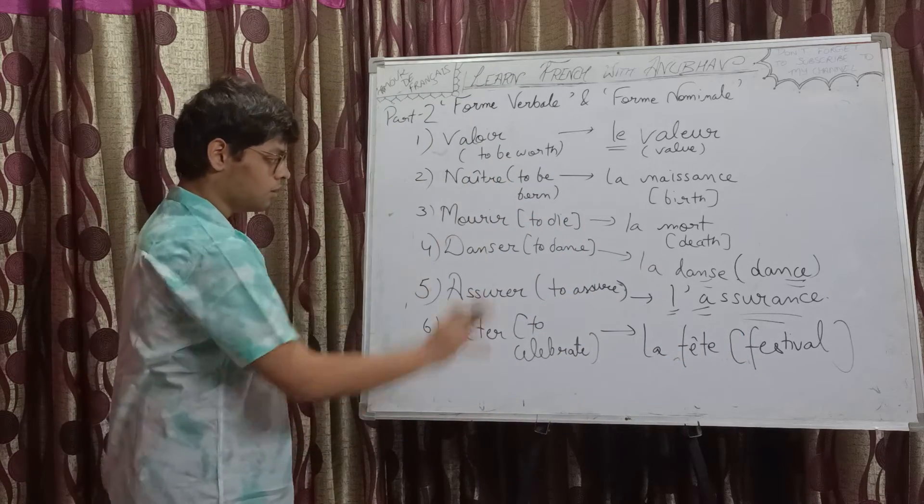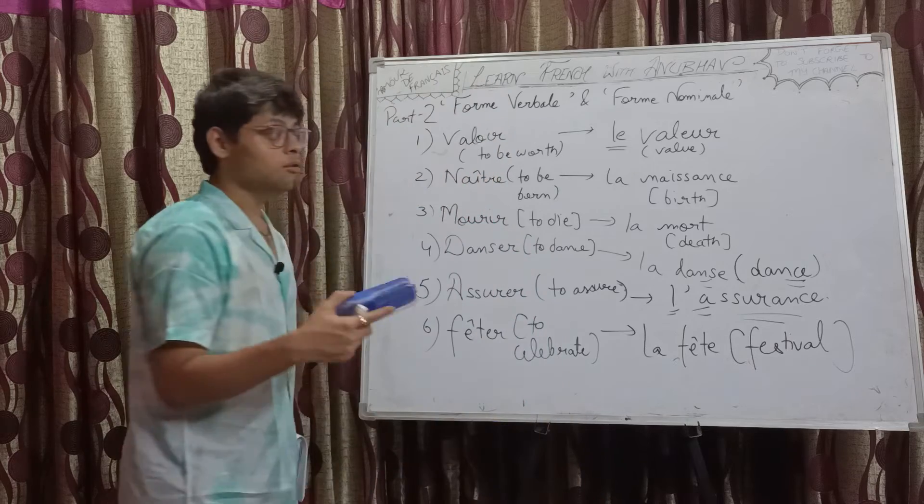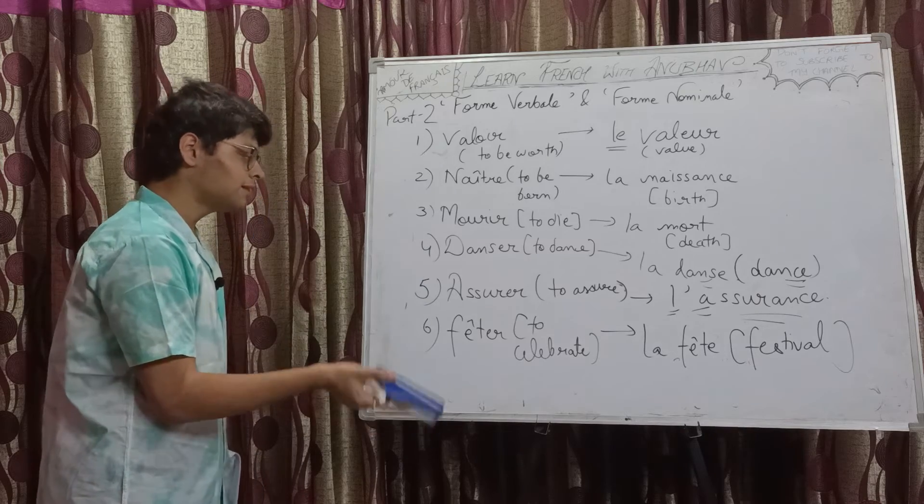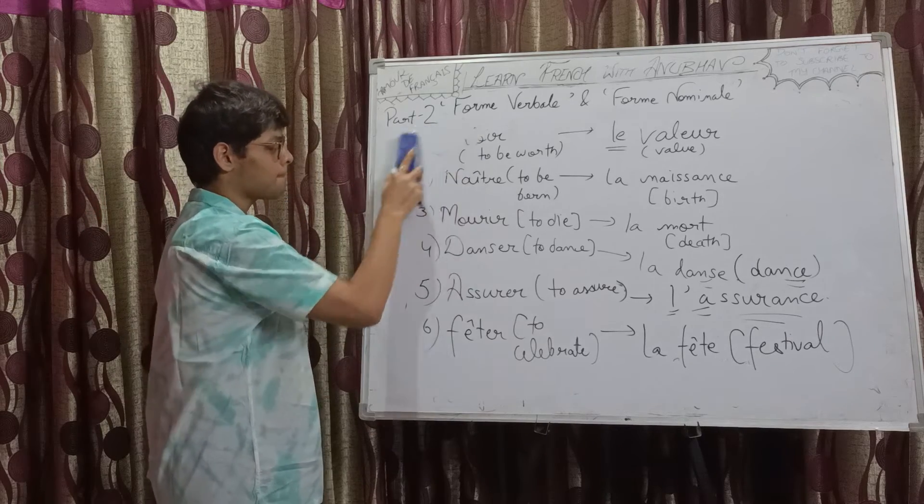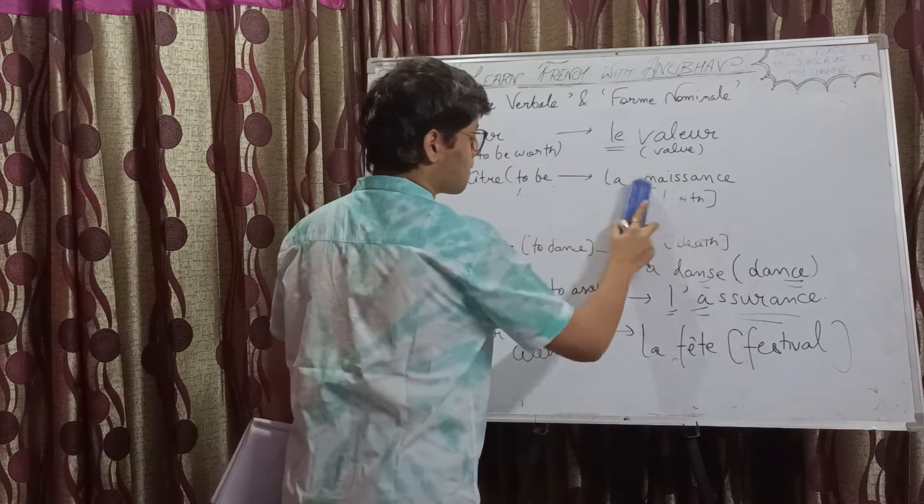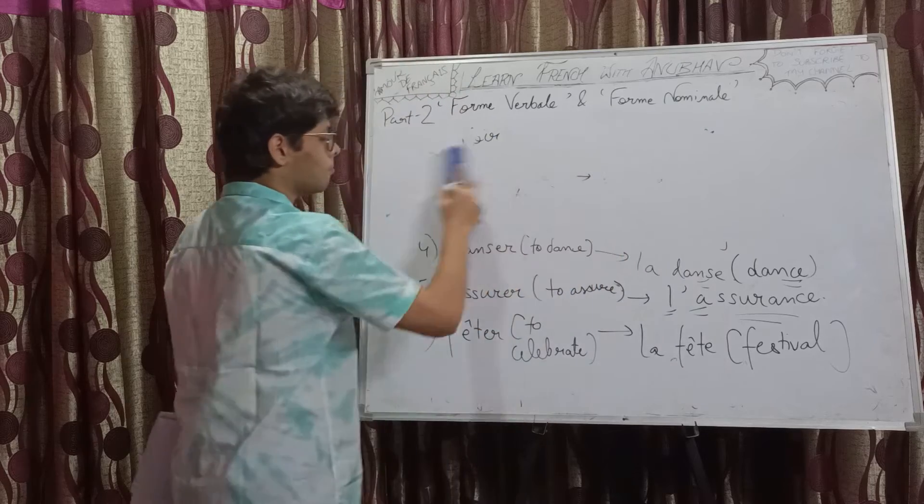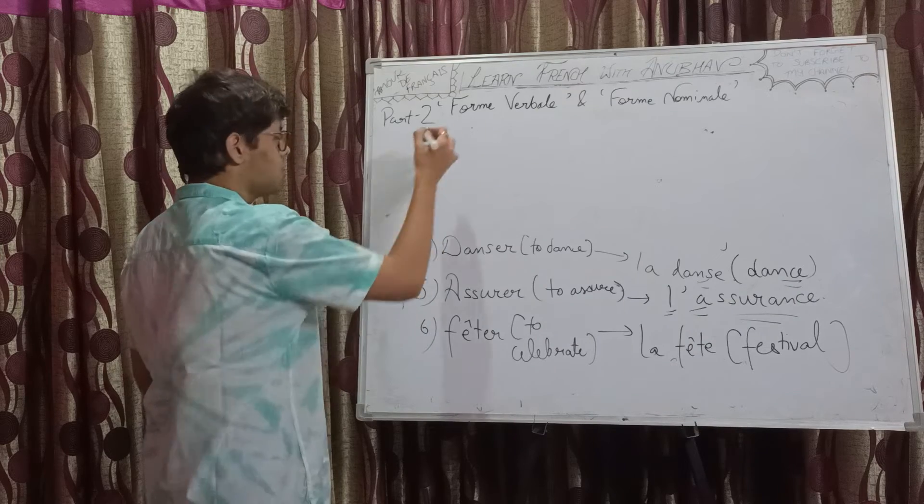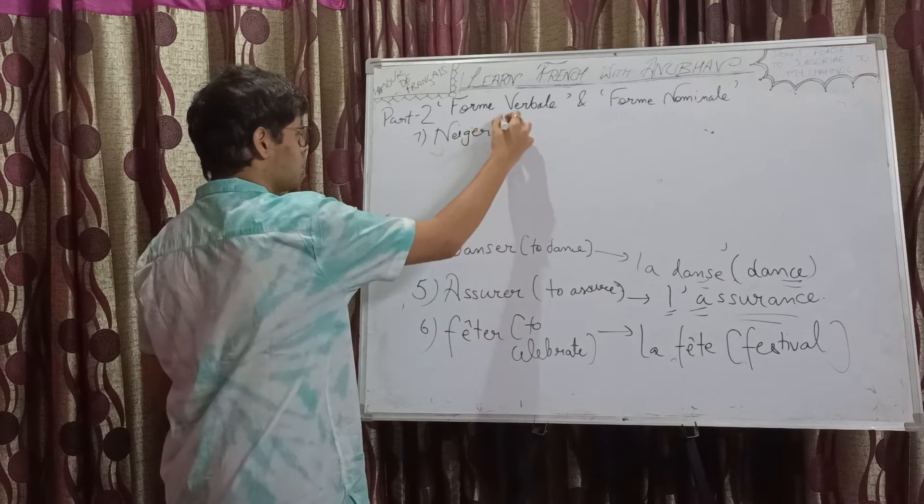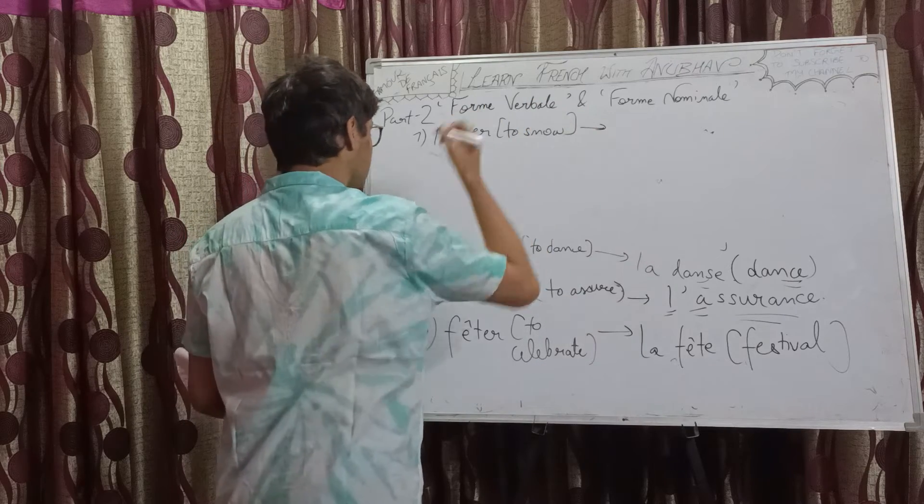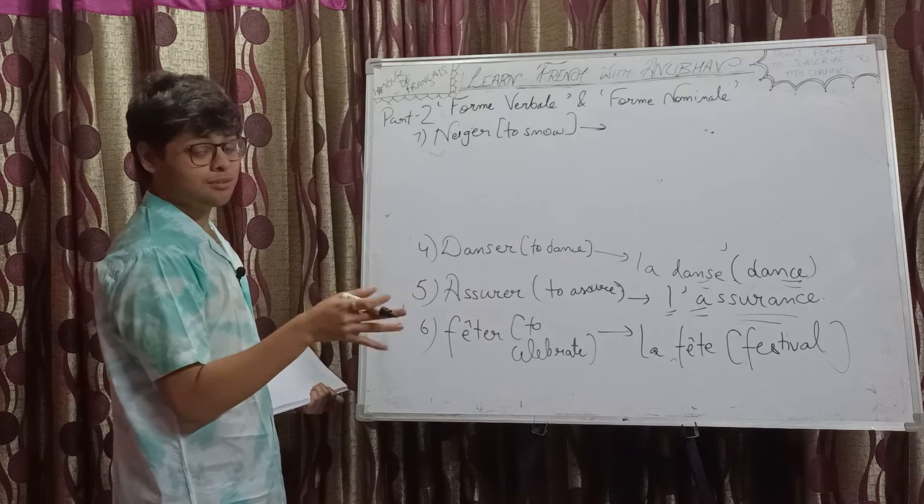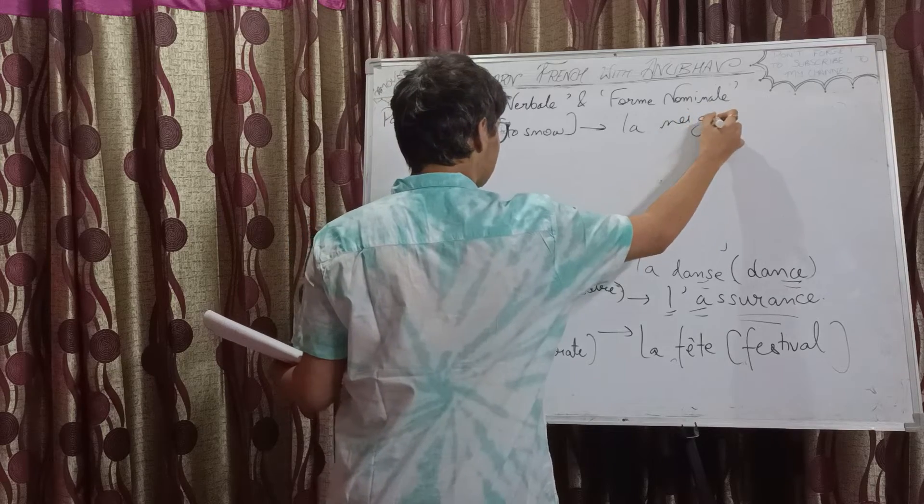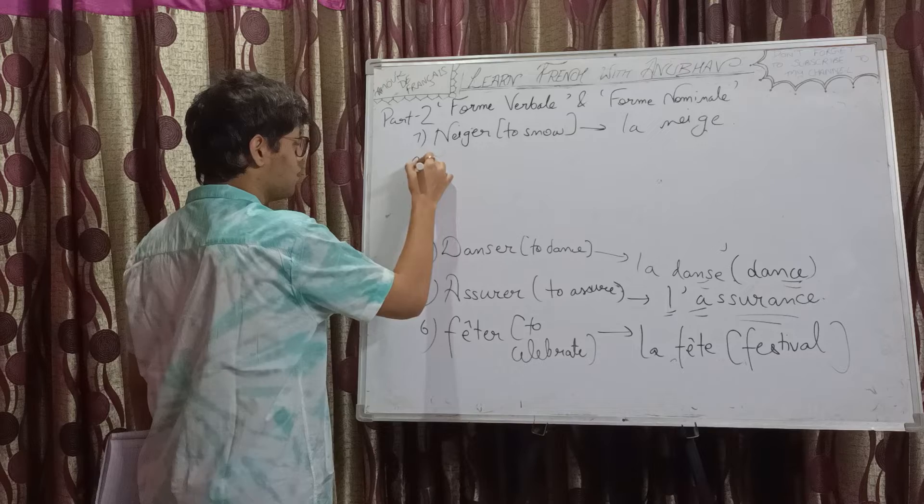You can take a few seconds. Till then, I am rubbing the top three to discuss the next three. We have discussed the first six. Number seven, we have neiger. Neiger means to snow and its noun form is very easy. Noun form will be snow. La neige.